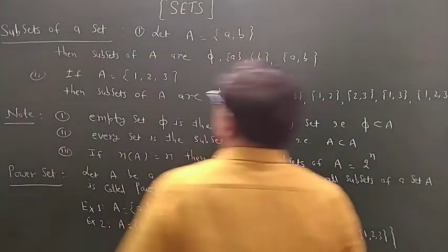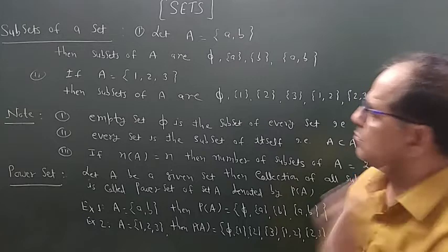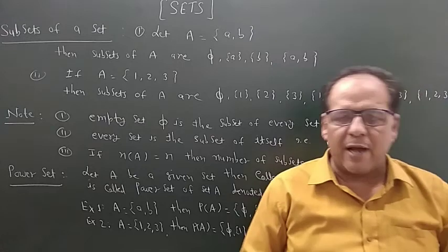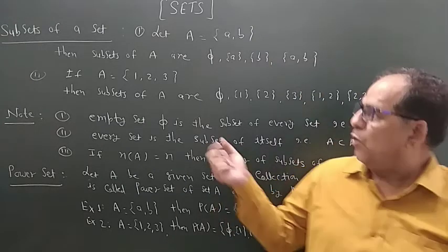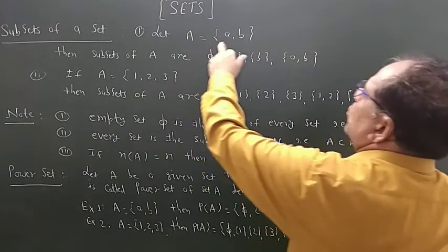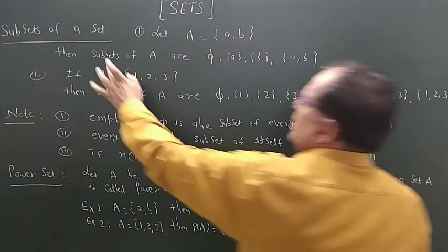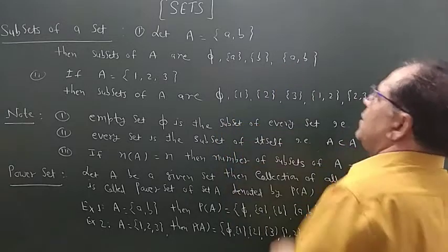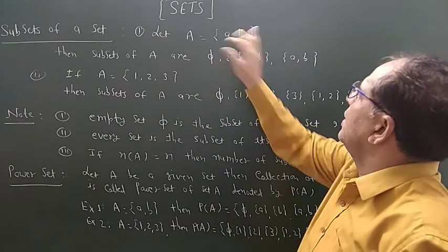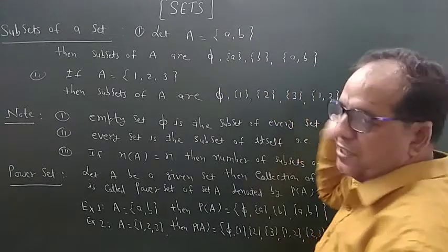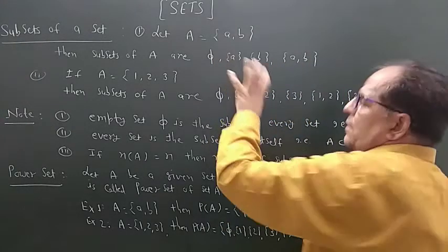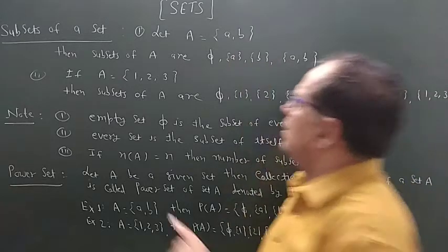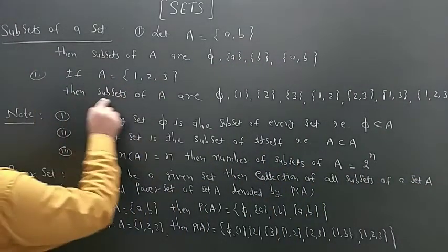Now a new topic: subsets of a set. If all the elements of set A are elements of set B, then A is called a subset of B. What are the subsets of any set? Let A = {A, B}. Then the subsets of A are: phi, {A}, {B}, and {A, B} — these are the four subsets of set A. If the elements of set A are 1, 2, 3, then the subsets of A are: phi, {1}, {2}, {3}...